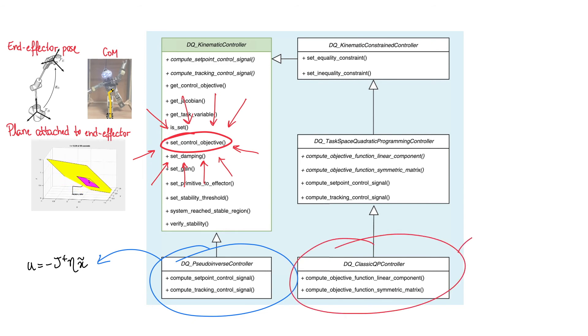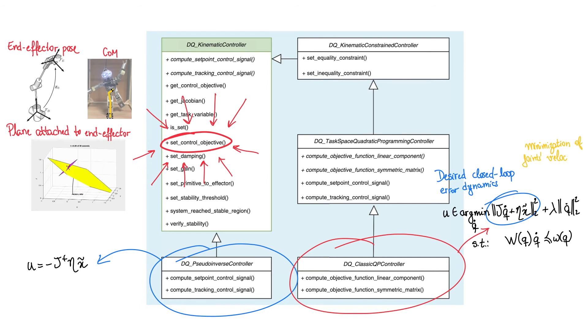The class DQ classic QP controller implements a classic constrained controller based on a quadratic program. The first term in the objective function enforces the desired closed-loop error dynamics, whereas the second one ensures that the joint's velocities are minimized. We use differential inequalities to enforce constraints on the control inputs.